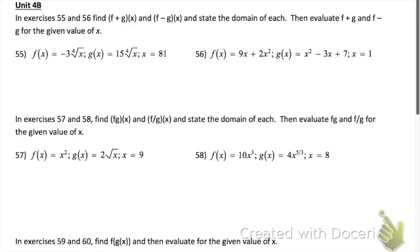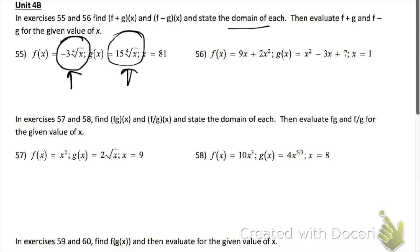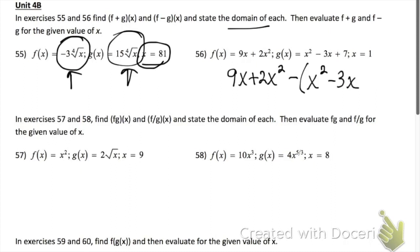Problems 55 and 56 ask you to find f plus g and f minus g, and state the domain of each. To find f plus g, take function f and add on function g. To find f minus g, take function f minus function g. For the domain, think about whether there's a fraction or a square root and what x can equal. Remember, you can only take the even root of positive numbers, so your domain would be 0 or bigger. Lastly, evaluate at 81 — plug 81 into each of your answers. Make sure when you do f minus g that you put parentheses around g and distribute that negative.